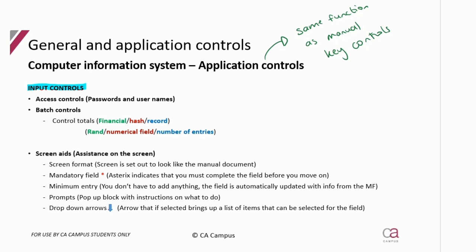We also have some controls over outputs, which help us make sure that output matches input. For processing, we said we're not going to worry about that because it's all about how the system is programmed itself. With something like Sage, I haven't got any control over how it's been programmed, but it has been developed, programmed, and tested to record things correctly when you put through an order, invoice, or similar transaction.